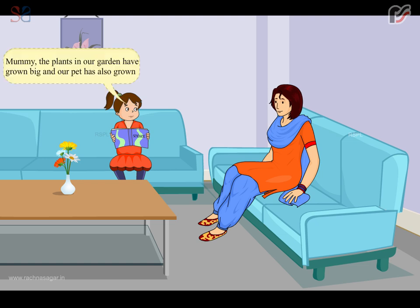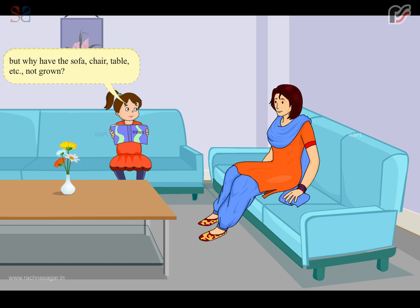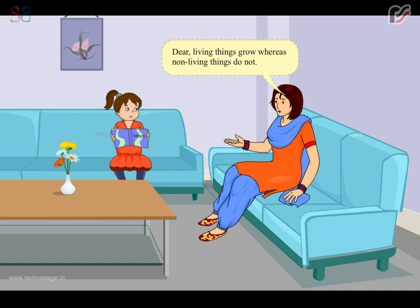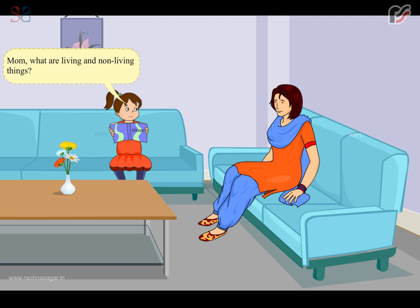Mummy, the plants in our garden have grown big and our pet has also grown. But why have the sofa, chair, table etc. not grown? Dear, living things grow whereas non-living things do not. Mom, what are living and non-living things?